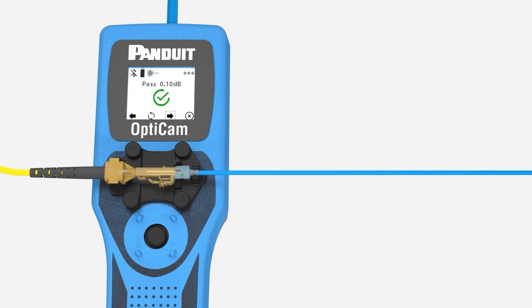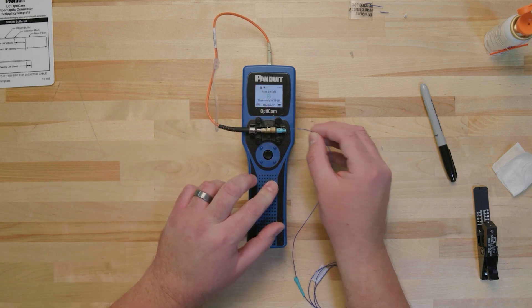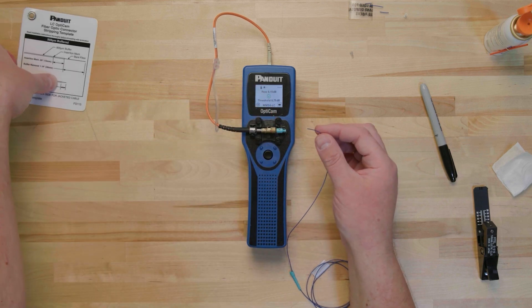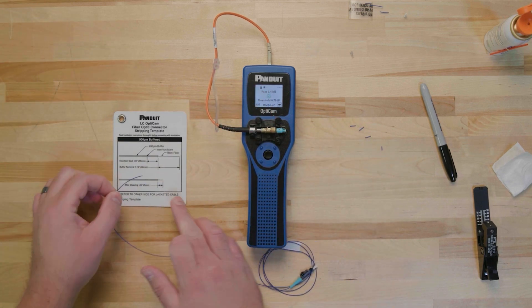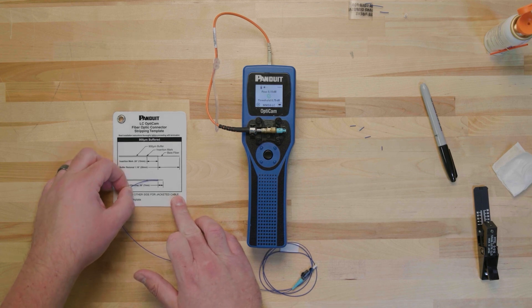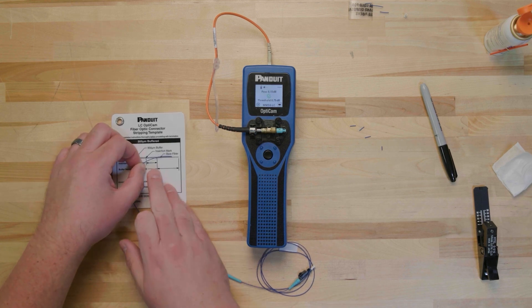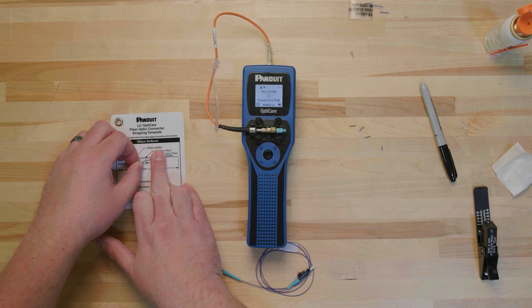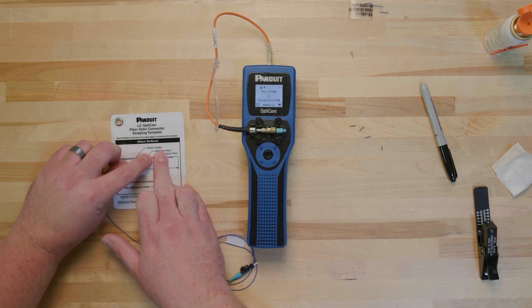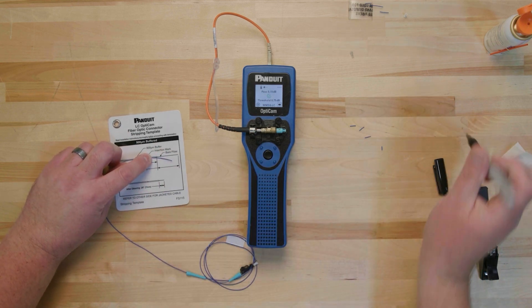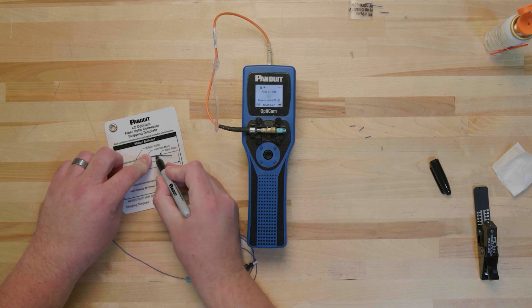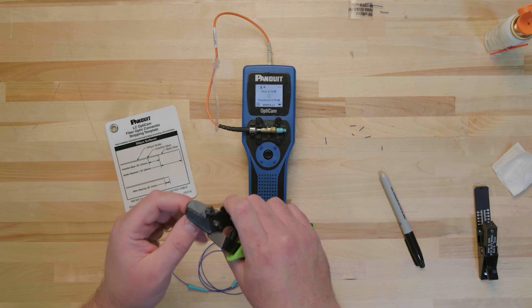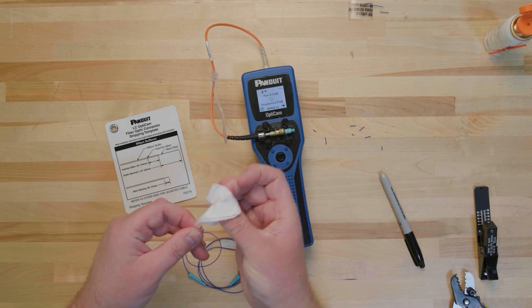If the connector fails, uncam the connector by reversing the rotation and removing the fiber from the connector. Using the strip template, verify that the fiber is still 7 mm long. If any fiber has broken off in the connector, a new connector must be used. If the fiber is still 7 mm long, repeat the marking, stripping, cleaning, and cleaving steps before attempting again.